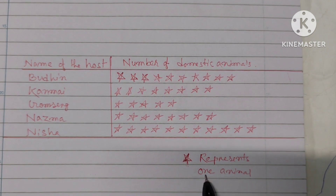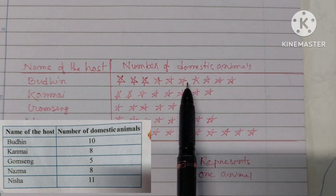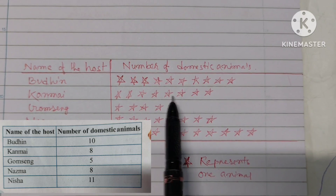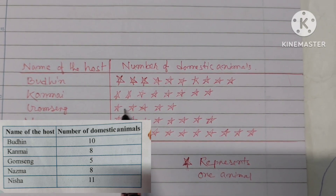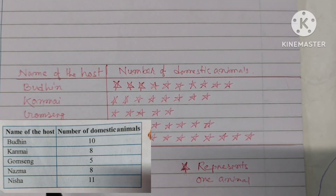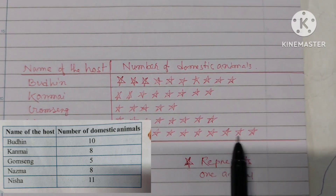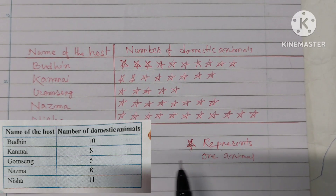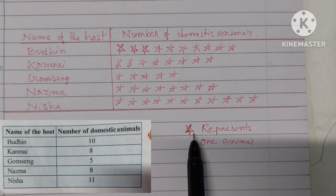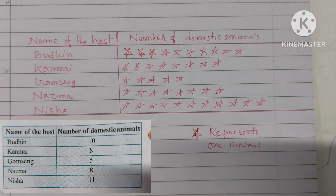Each symbol represents one animal. Buddhin has 10 animals: 1, 2, 3, 4, 5, 6, 7, 8, 9, 10. Kanmai has 8 animals: 1, 2, 3, 4, 5, 6, 7, 8. Gomsaka has 5 animals: 1, 2, 3, 4, 5. Nazma has 8 animals: 1, 2, 3, 4, 5, 6, 7, 8. Nisha has 11 animals: 1, 2, 3, 4, 5, 6, 7, 8, 9, 10, 11.